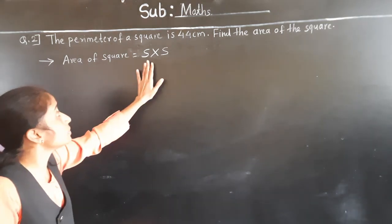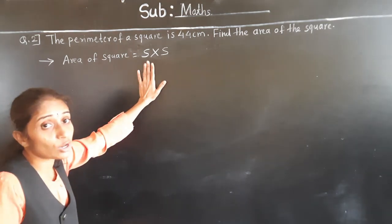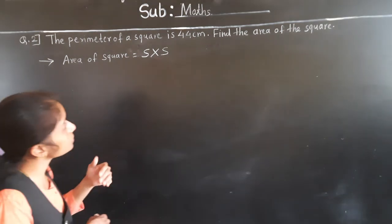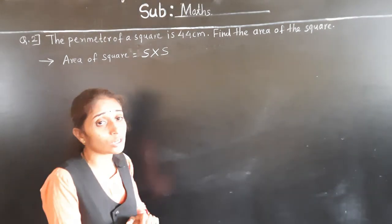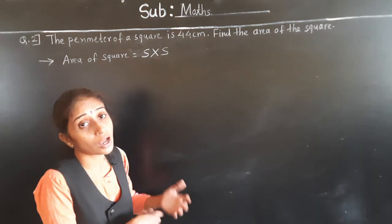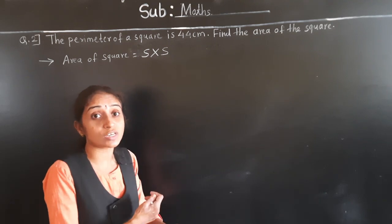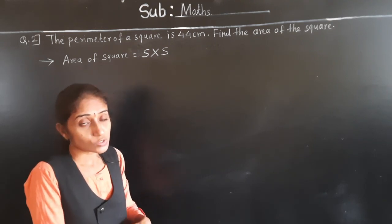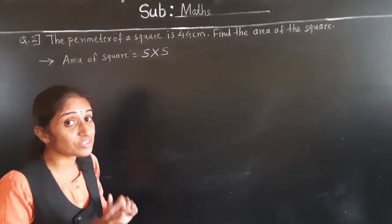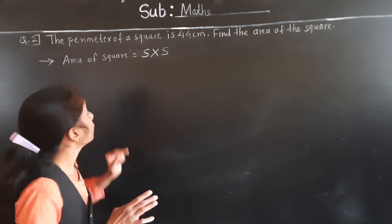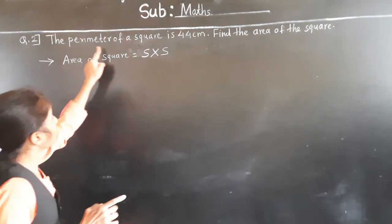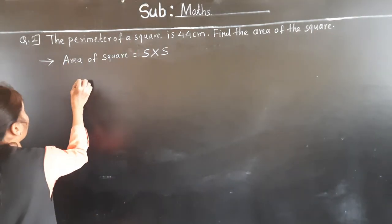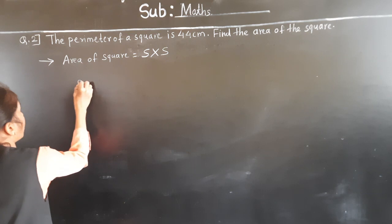The formula for area of square is side multiplied by side. But side is not given — only perimeter is given. You might think: how will we find the area if the side is not given? It's very easy. Since perimeter of the square is given, let's write the perimeter of square formula.